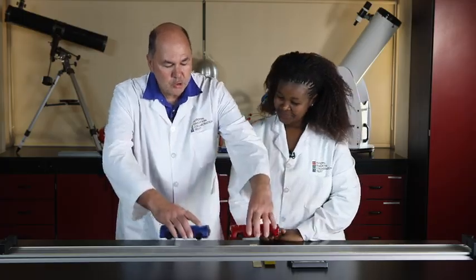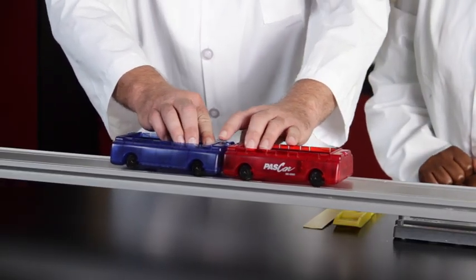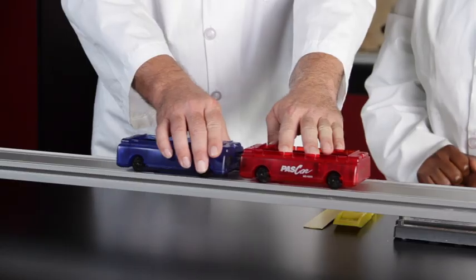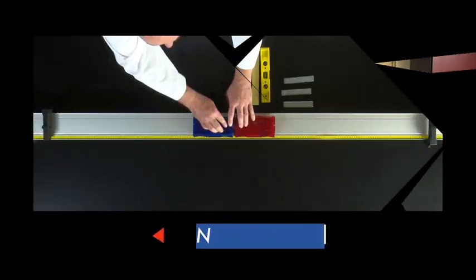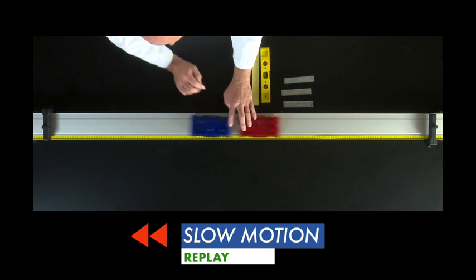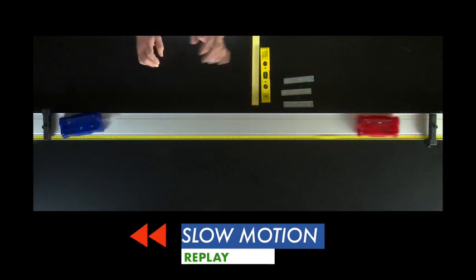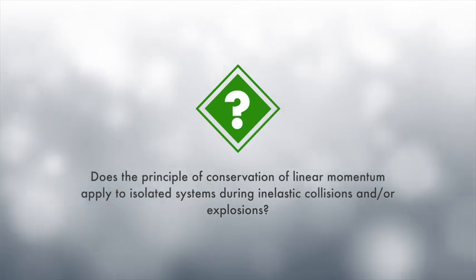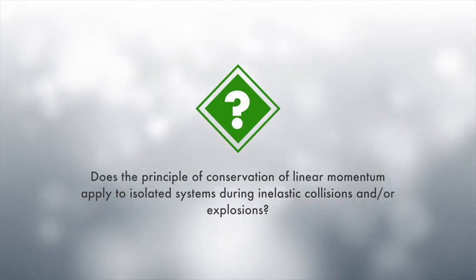The principle of linear momentum holds true for an explosion which is inelastic. Two trolleys are placed on a track and released by a spring; they move in opposite directions. Before the explosion, both trolleys are at rest — they have zero momentum and zero kinetic energy. After the explosion they have kinetic energy and momentum. Kinetic energy is not conserved during an explosion; therefore an explosion is inelastic. The question we are investigating is: does the principle of conservation of linear momentum apply to isolated systems during inelastic collisions and/or explosions?